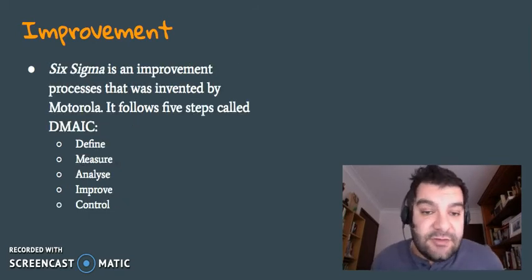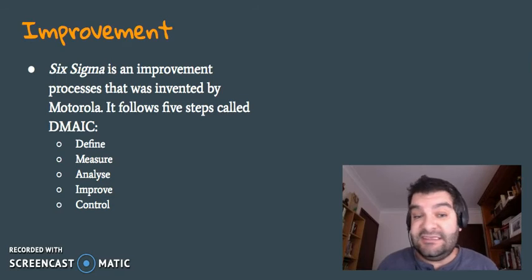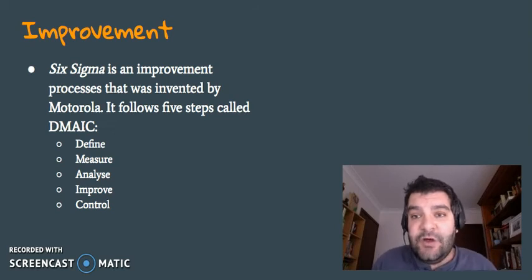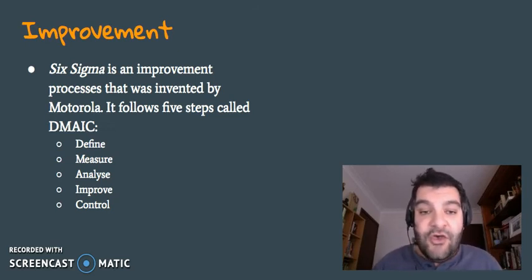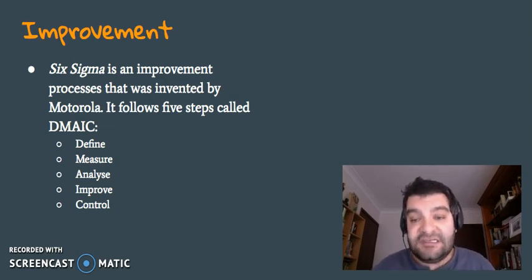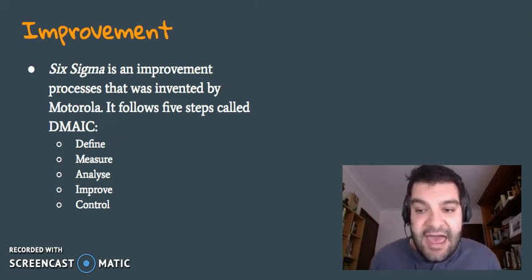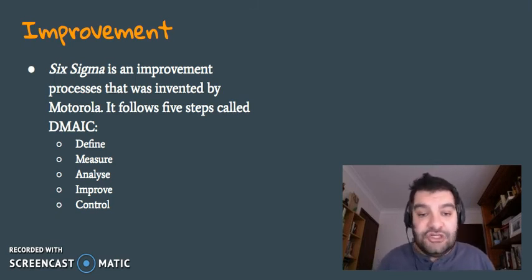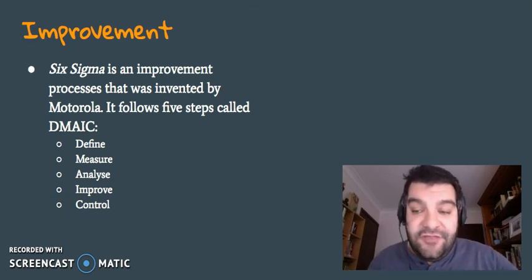Another way of improvement was invented by Motorola in the 90s, called Six Sigma — sometimes also referred to as Sigma Six. I've created a video for this from the Year 11 course, which has some websites you can visit about Six Sigma in the description, so feel free to look at that. It follows five steps: define what you want to do, measure what you're going to do, analyze how you do it and the results, improve on it, and then control it.